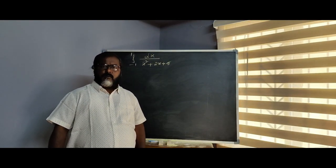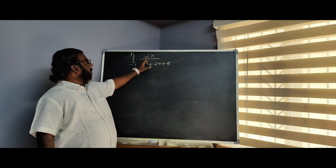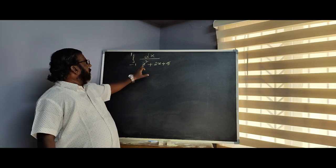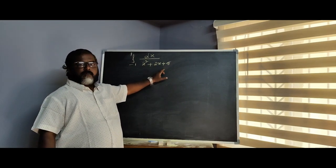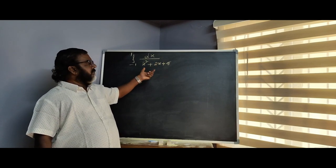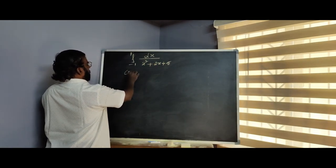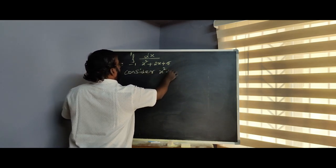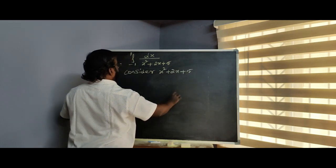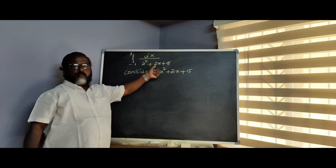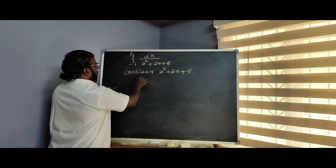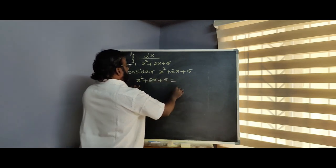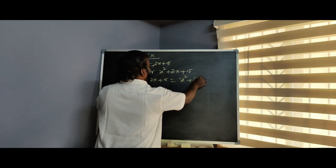We will move on to the next problem. Integral from minus 1 to 1 of dx divided by x squared plus 2x plus 5. The denominator is x squared plus 2x plus 5. Before integrating directly, we have to simplify the denominator.